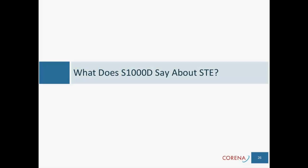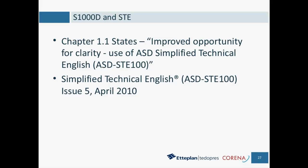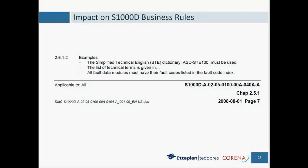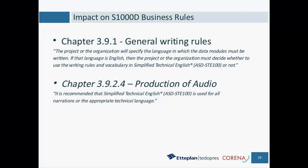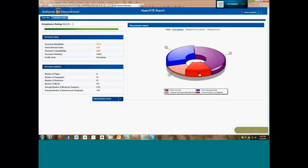So what exactly does S1000D say about Simplified Technical English? If we look strictly at chapter one, it states that projects must address these things in their business rules. The use of a checker tool can be quite handy because it allows you to catch errors you didn't see and get all of those out of the way.